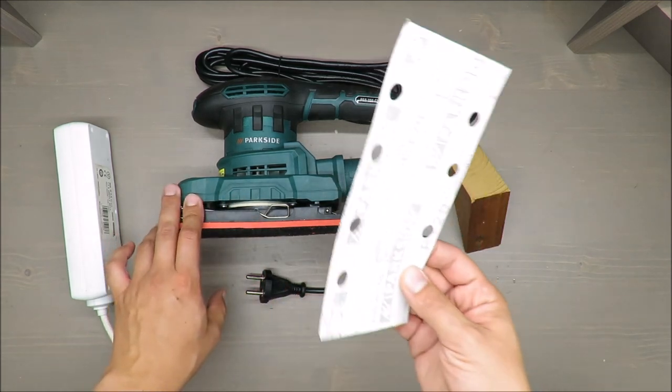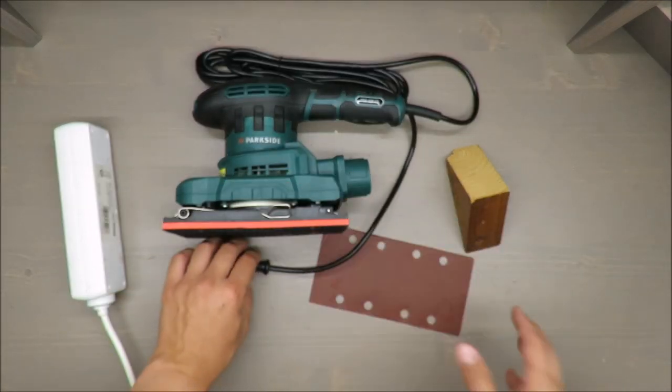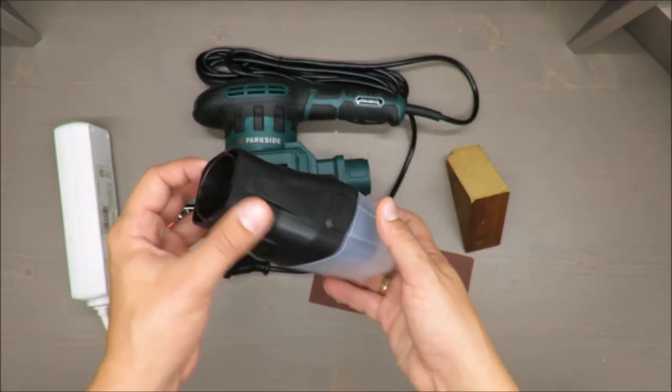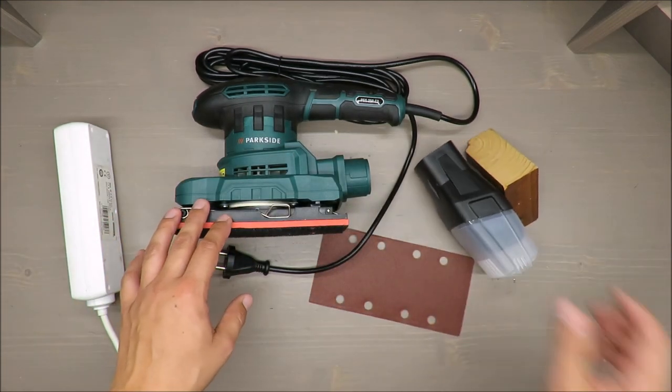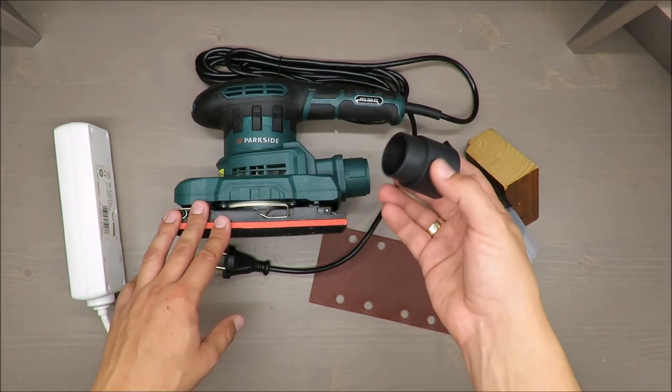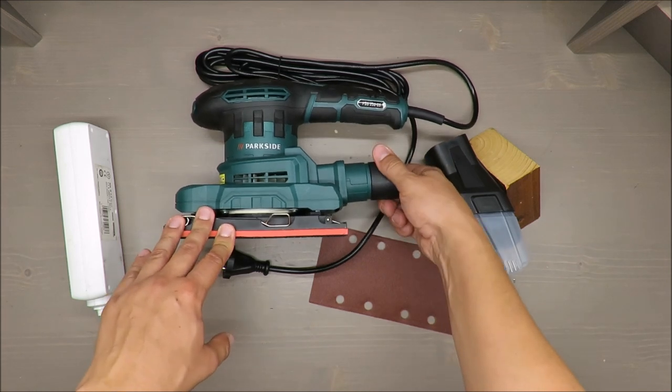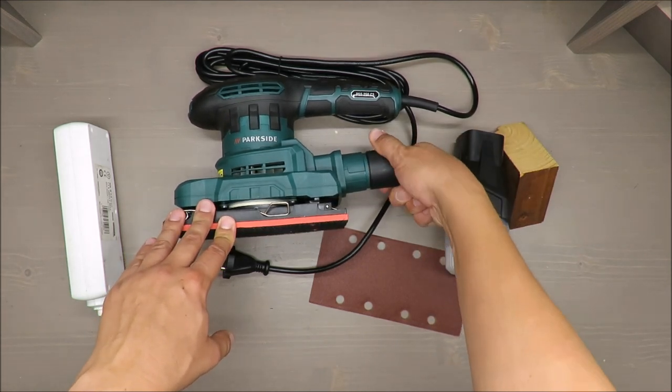As an accessory you've got one paper sheet, some compartment for the dust, and for vacuum cleaner some coupling outside.